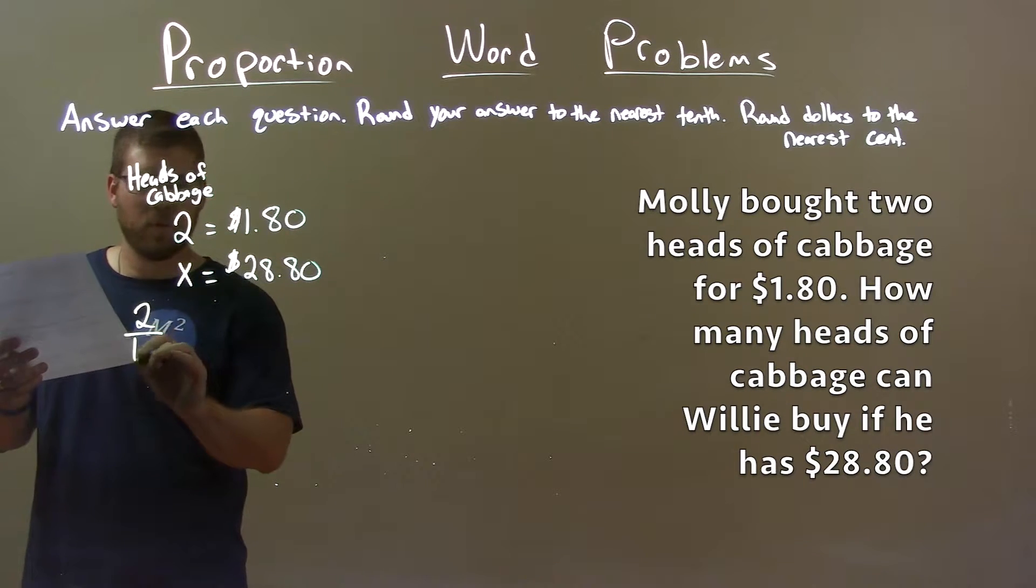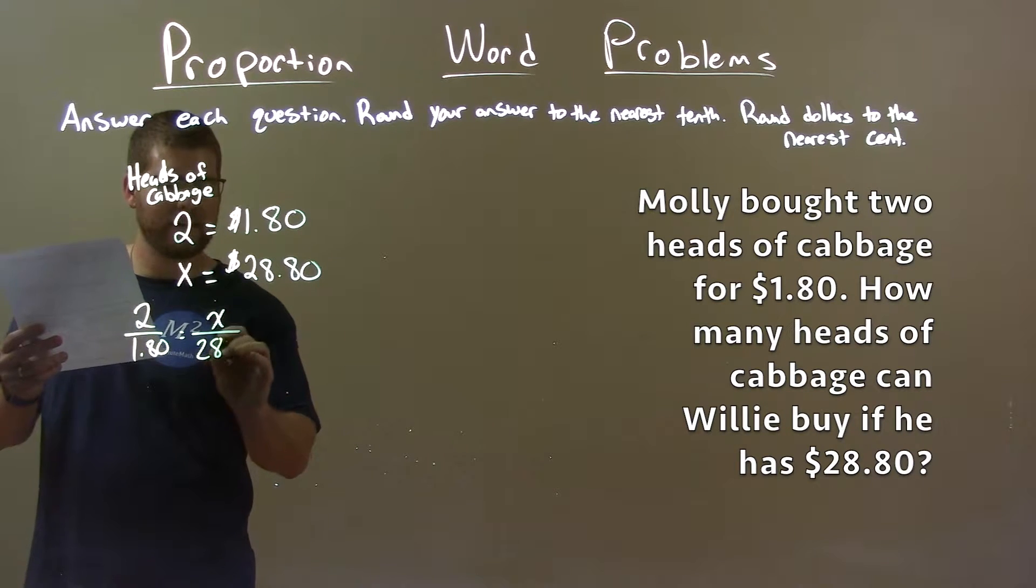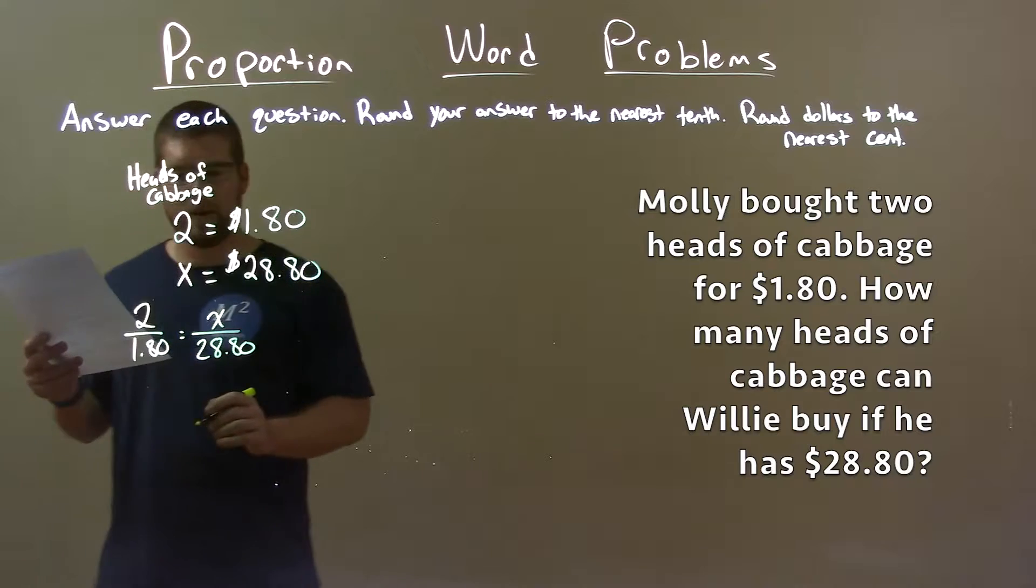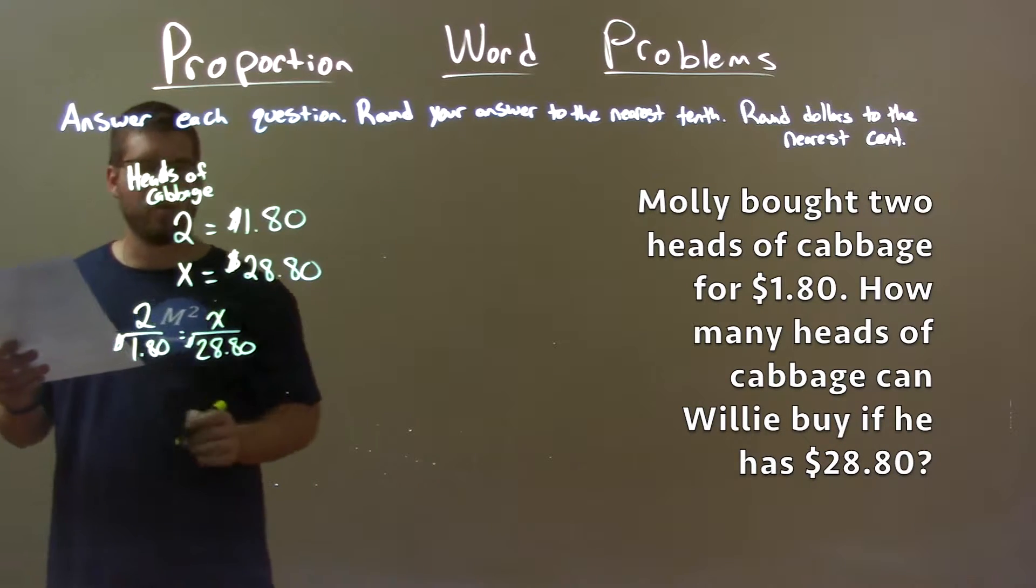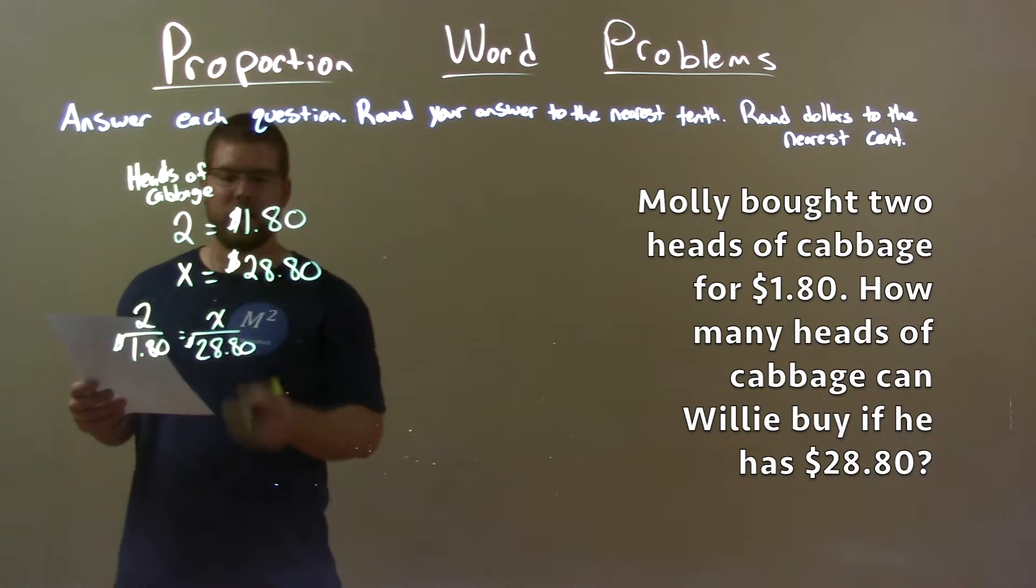We know two over $1.80 equals X over $28.80. Two heads of cabbage for $1.80, X heads of cabbage will cost us $28.80. We need to find that X.